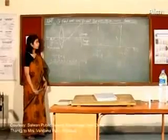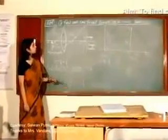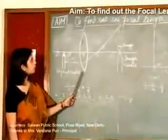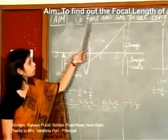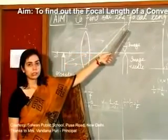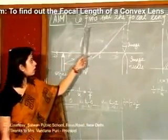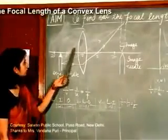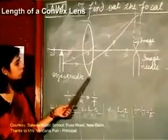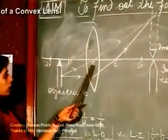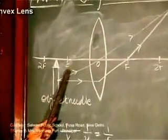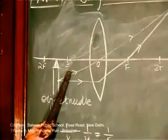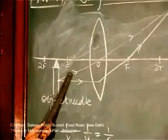For this experiment in optics, we will be dealing with the convex lens. Our aim will be to find out the focal length of a convex lens. The ray diagram for the experiment is as follows — this shows the convex lens with optical center O. This is the focal length of the convex lens, which you will be finding out when we start doing the experiment.